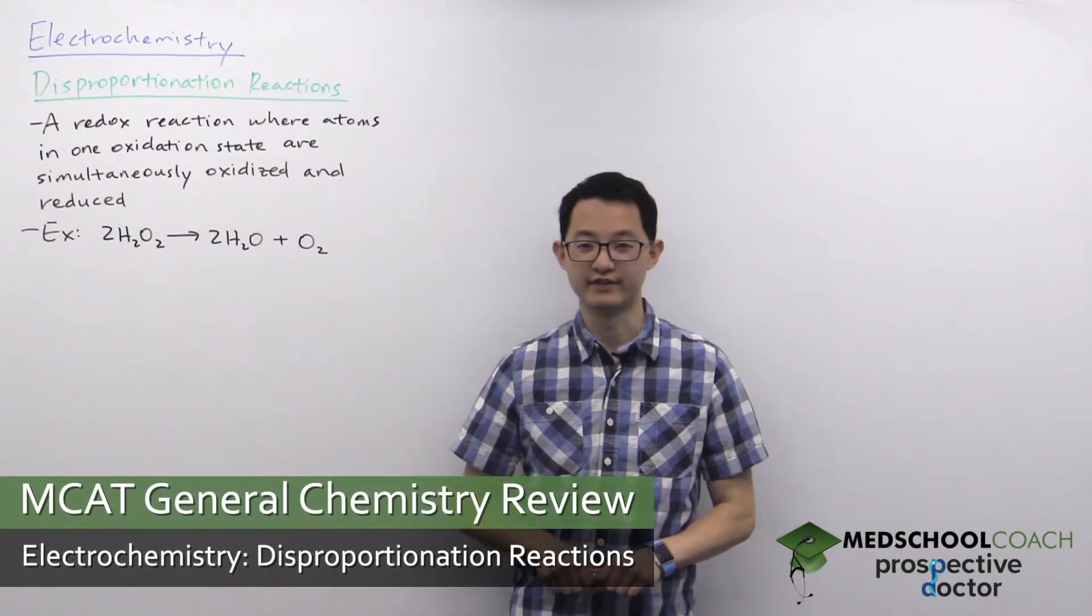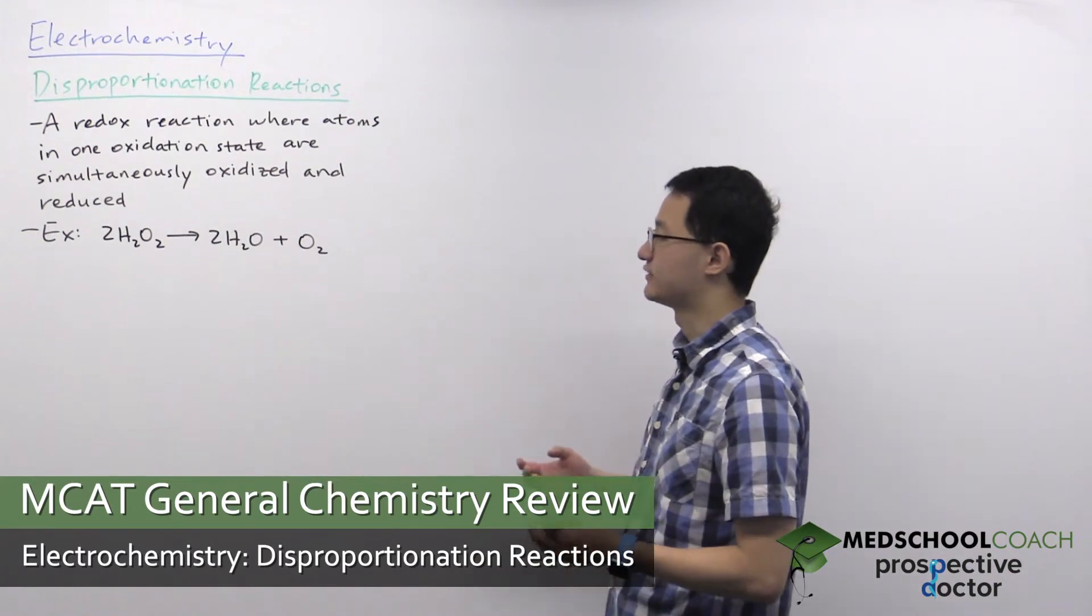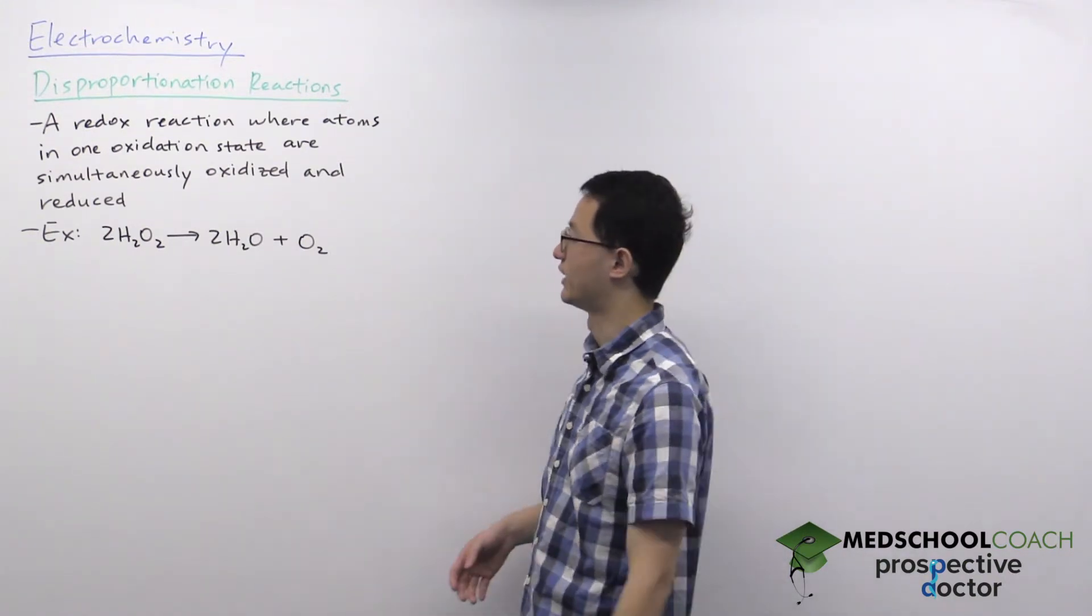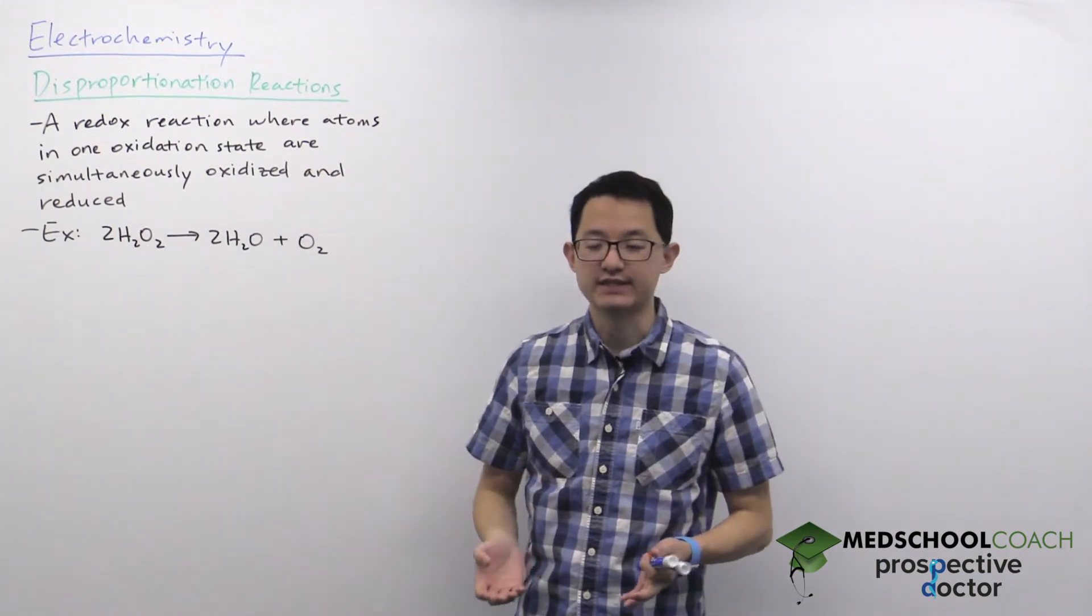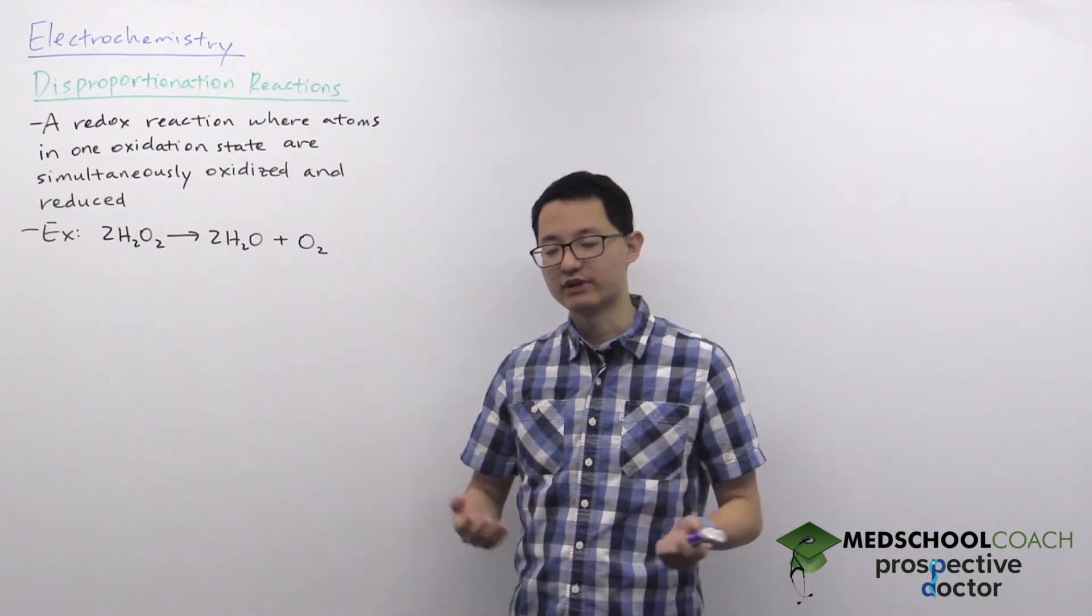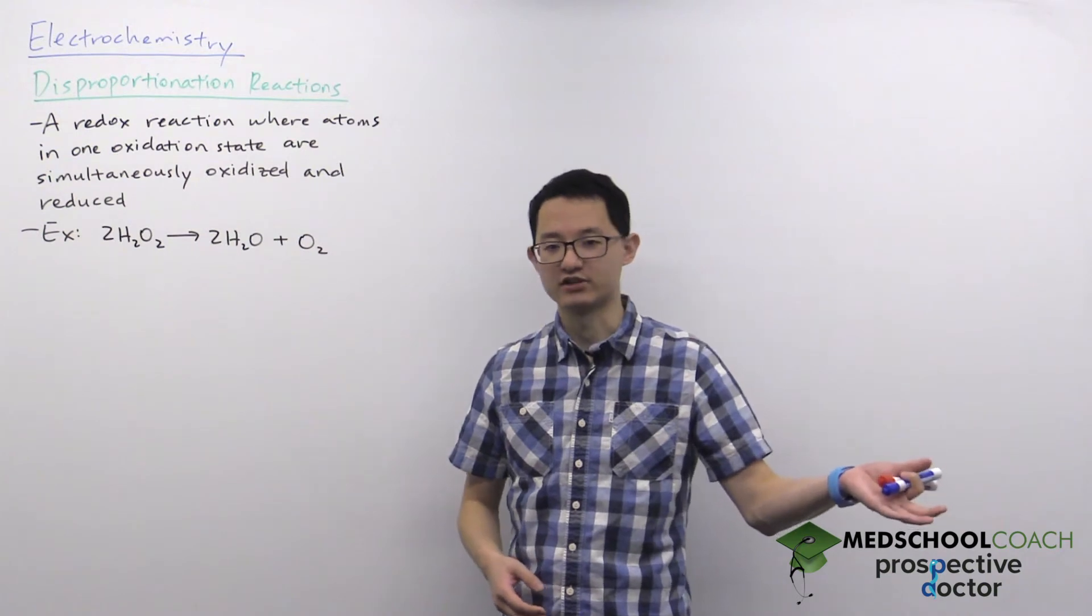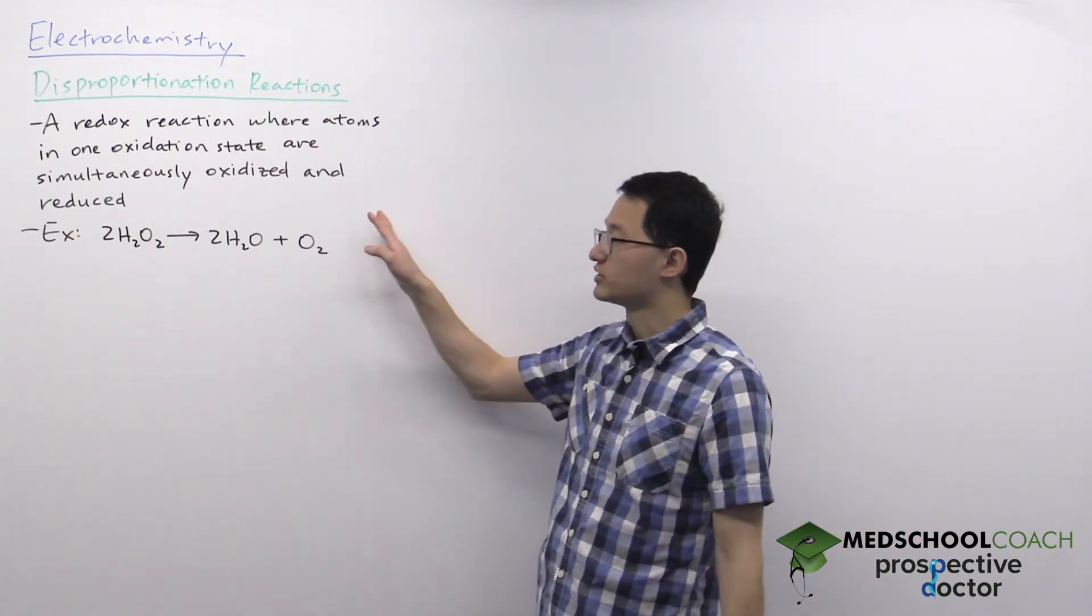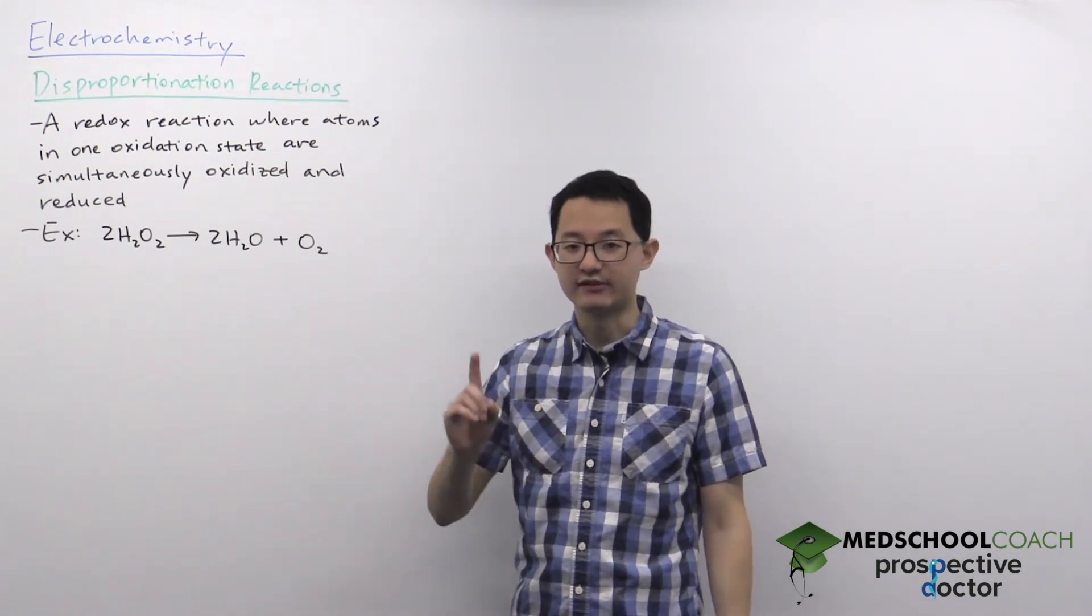In this video we're going to go over disproportionation reactions. Disproportionation reactions are a special case of redox reactions where atoms in one oxidation state are simultaneously oxidized and reduced. Usually when we look at redox reactions, one atom gets oxidized and a different atom gets reduced. In a disproportionation reaction the same atom gets oxidized and reduced.